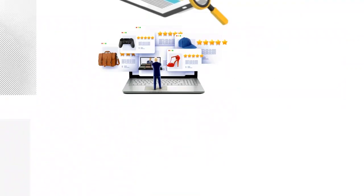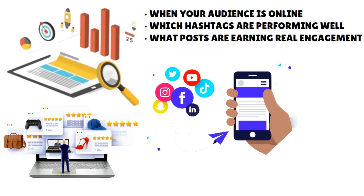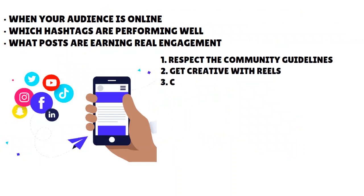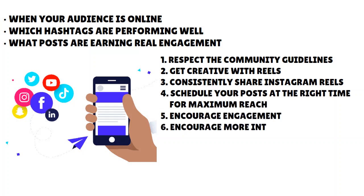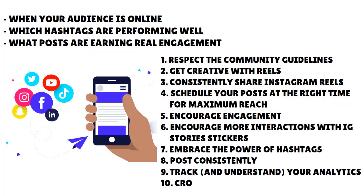Number ten: cross-promote your Instagram content. If you're looking for a quick and easy engagement win to help boost your algorithm ranking, cross-promoting your Instagram content is a great place to start. You will share views, likes, and comments, allowing you to leverage and engage with each other's community — a win-win for everyone involved. So the top 10 ways to beat the Instagram algorithm include: comply with community guidelines, get creative with reels, consistently share reels, schedule posts at the right time, encourage engagement, use stories stickers, embrace hashtags, post consistently, track analytics, and cross-promote your content.